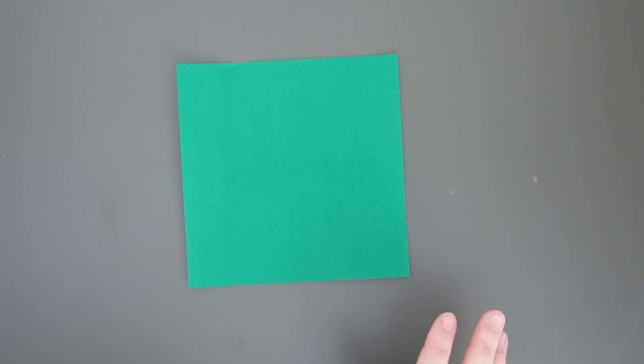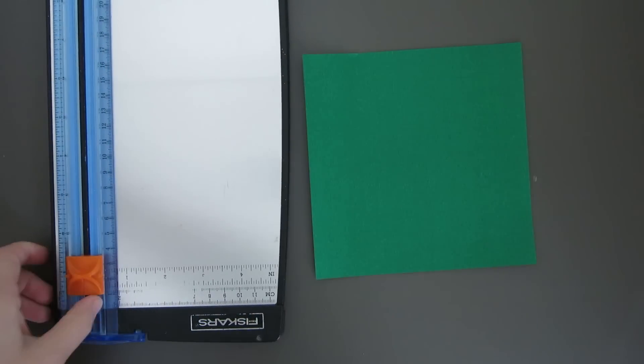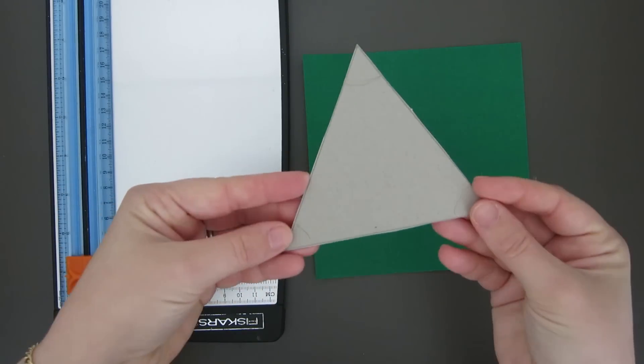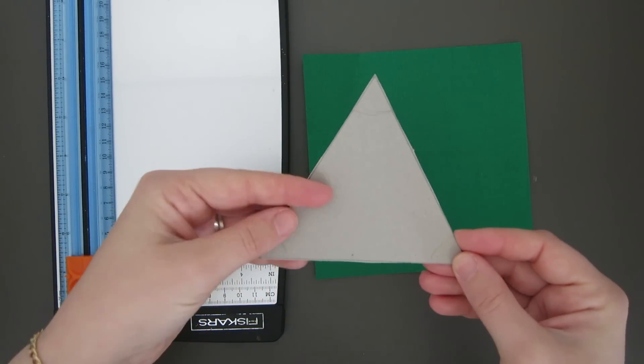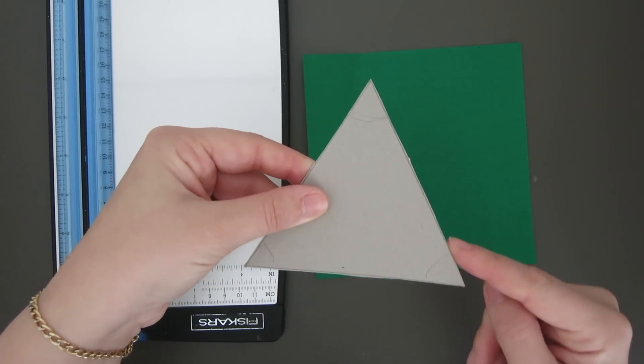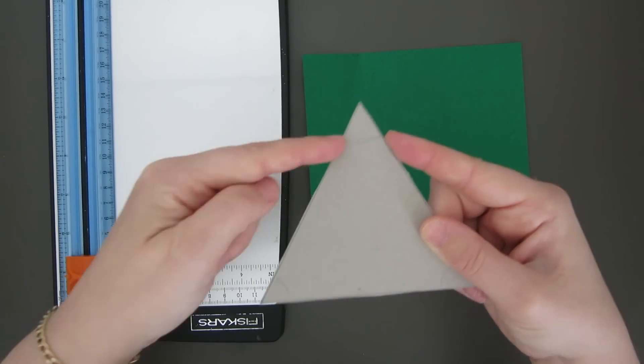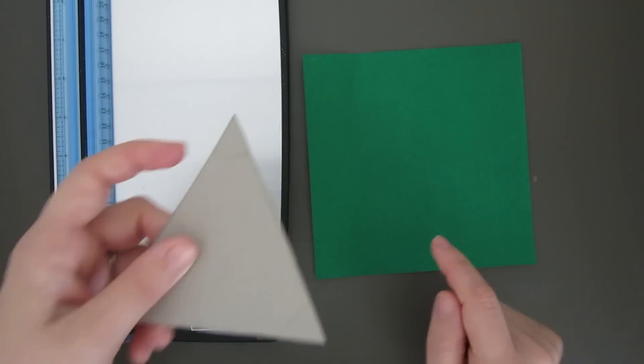We're going to do this origami style and fold an equilateral triangle. So the first thing you need to do is decide what dimensions you want your triangle to be. And for the purpose of these videos I'm going to be using an equilateral triangle that has a four inch side. So each of the sides are going to be four inches long.